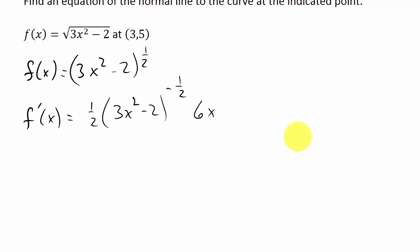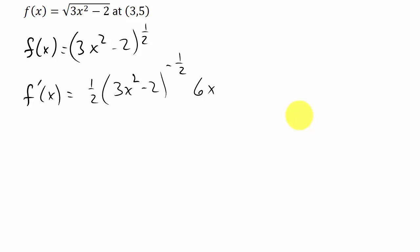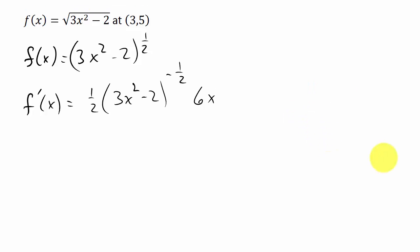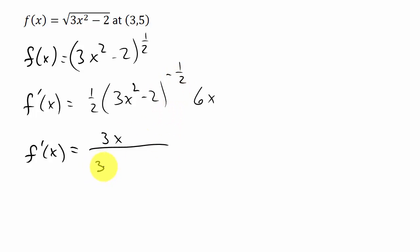It doesn't really matter what derivative rule you have to use. Whenever you're finding the equation of the normal line, or even the tangent line, the main thing you have to understand is you just take the derivative of the function and evaluate it at the point — that gives you the slope of the tangent line. So let's simplify: f prime of x equals 6x times 1 half, which gives me 3x, over 3x squared minus 2 raised to the 1 half.